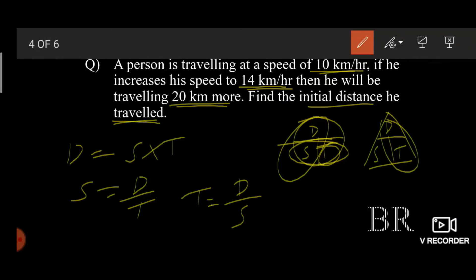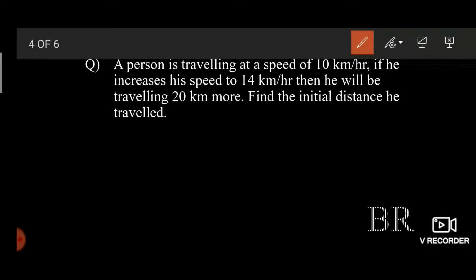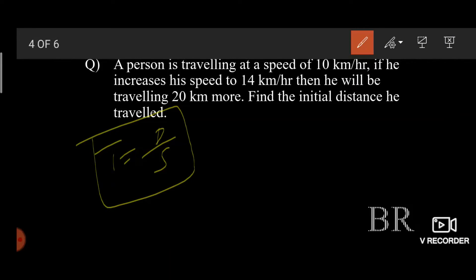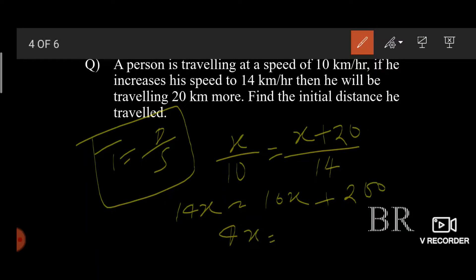When you observe the question, you will get to know that time is constant in the entire process. So as time is constant, I am going to use this equation and equate both the cases. So initial distance, which we don't know, so I am considering it as x by initial speed that is 10 kilometers an hour, is equal to increased distance x plus 20 by increased speed that is 14. When you equate both these equations, you get 14x is equal to 10x plus 200, 4x is equal to 200, x is equal to 50, which is our final answer.